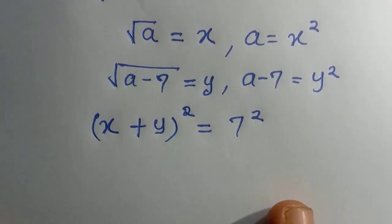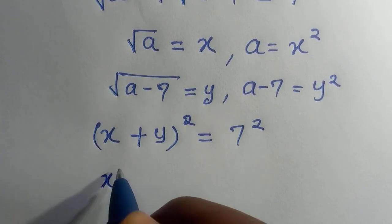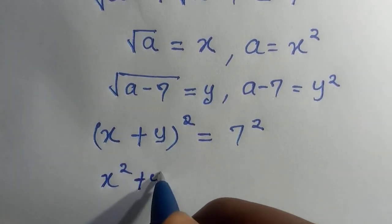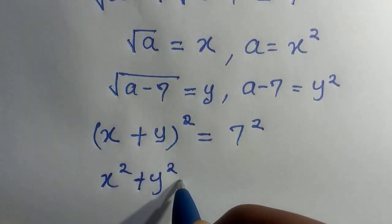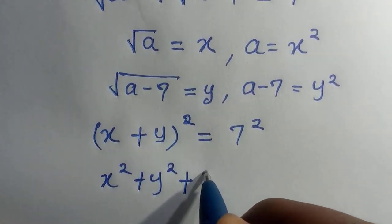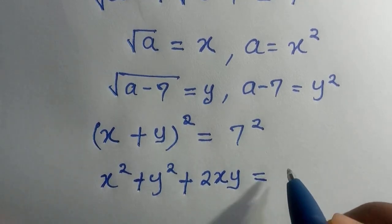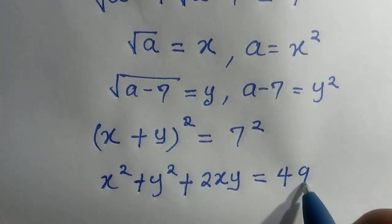So, (x + y)² is given as x² + y² + 2xy equals, and 7² is given as 49.